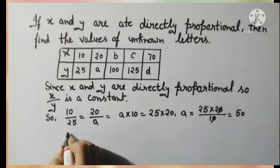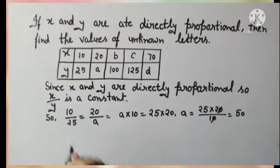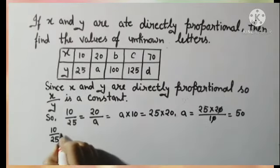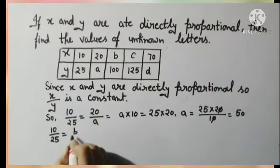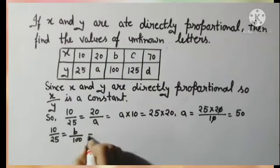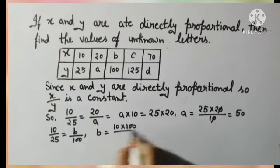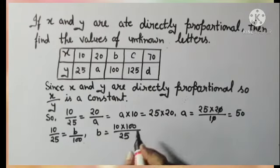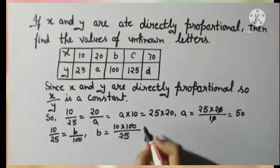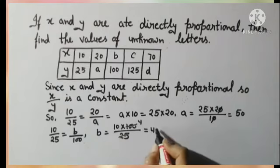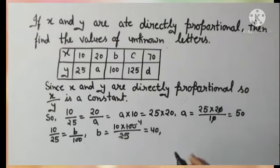Now finding the next value, b. Again using the first ratio: 10/25 = b/100. Cross-multiplying: b = (10×100)/25. Cancelling, 100/25 = 4, so b = 10×4 = 40.